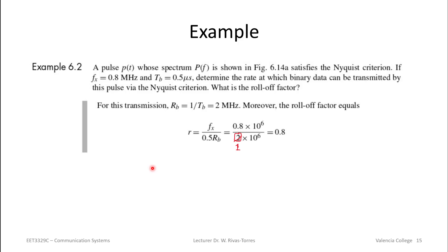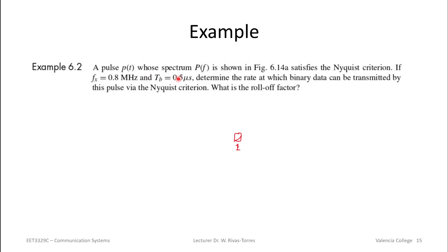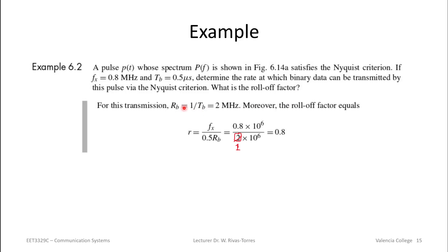Let's do an example. Given an excess bandwidth of 0.8 MHz and a bit time of 0.5 microseconds, the data rate is 1/Tb = 2 MHz. The roll-off factor r = fx / (0.5·Rb) = 0.8 MHz / (0.5 × 2 MHz) = 0.8. Note that the book has a mistake on this calculation — make sure to multiply by 0.5 in the denominator to get the correct roll-off factor of 0.8.